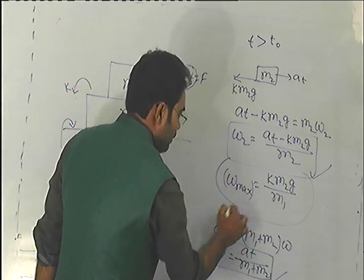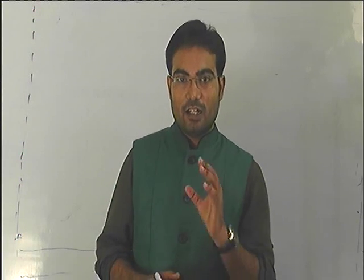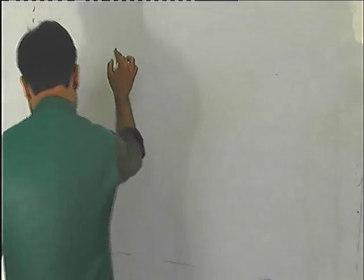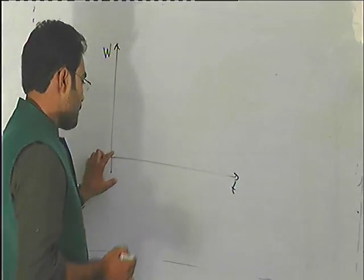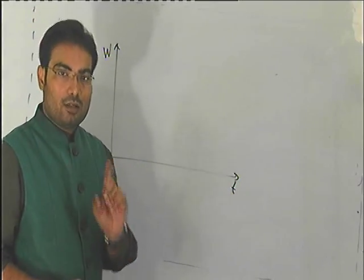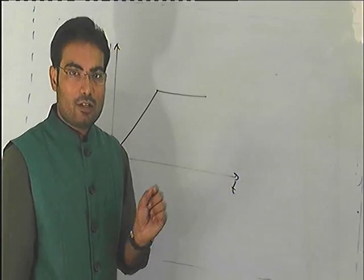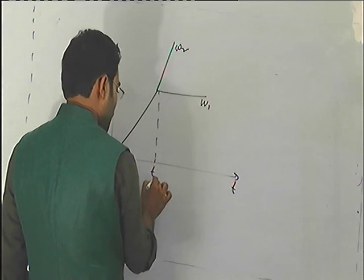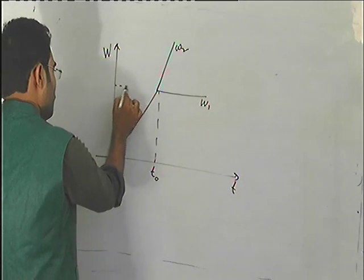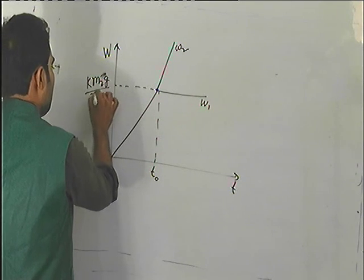This will be m1's acceleration when t equals T0. For question number 65, we draw acceleration versus time. Up to T0, both blocks move together and acceleration increases with time. But after T0, m1 acceleration will be constant and m2 acceleration will be increasing. This is w1, this is w2, this is time T0, this is the maximum acceleration point, which has value K m2 g divided by m1.